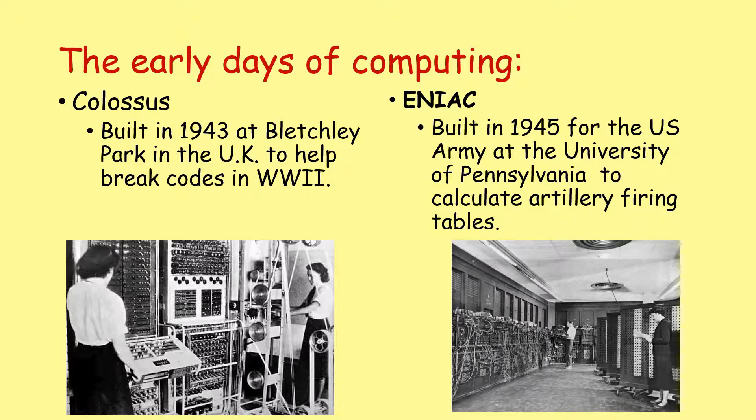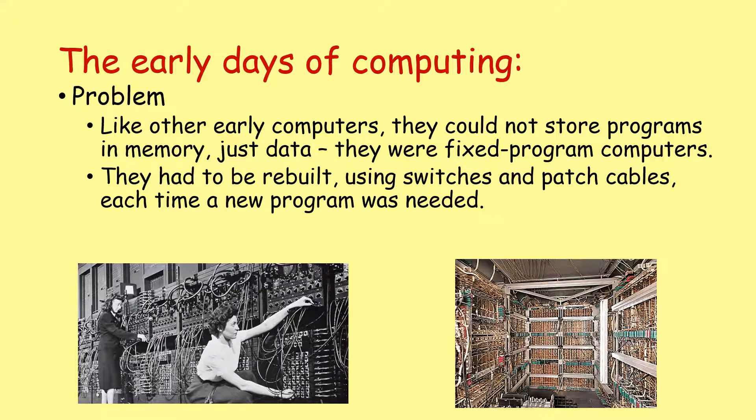But they weren't perfect. They had some problems. Just like early computers in general, they could not store programs in memory, just data. They were what we refer to as fixed program computers. If you wanted to change the program they run, you basically had to rebuild the computer using switches and patch cables to actually change it to run a new program. So the American ENIAC system, if you wanted to change the software, that took three weeks of engineering. So clearly, these are really powerful computers, electronic and digital, but they were fixed programs, so they were limited in their use.